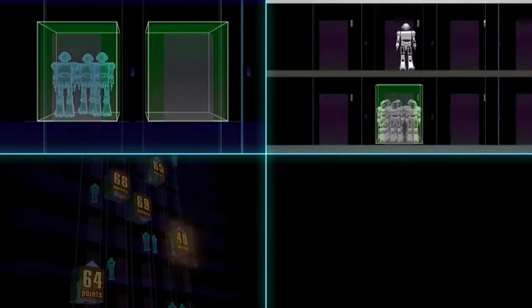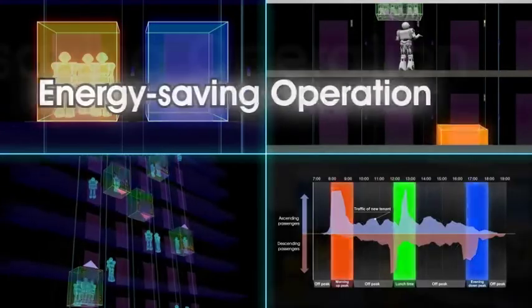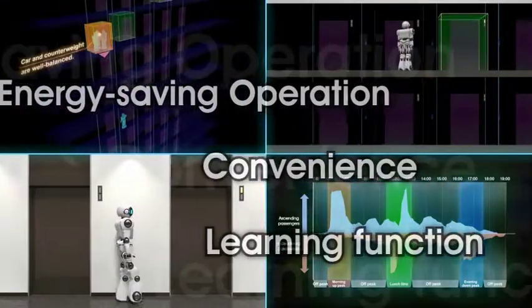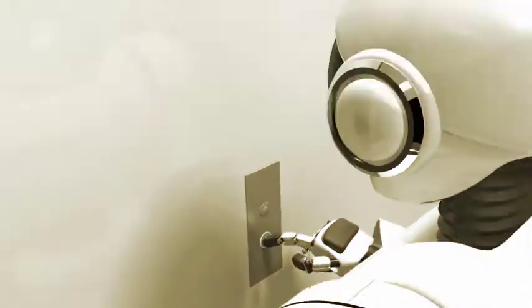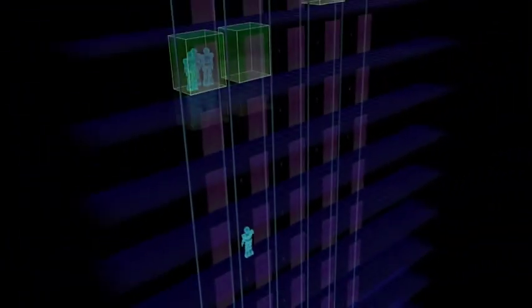Using advanced technologies, Mitsubishi Electric Sigma AI2200C can satisfy increasing customer demands. When the weight is well balanced between the car and its counterweight, the traction machine doesn't need full power for the elevator to travel.